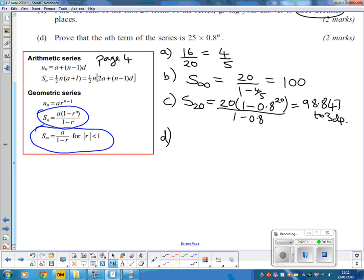Again, there's a formula in the formula book, now we're using the one we haven't used yet. That says U_N equals A, A was 20, times the common ratio to the power of N minus 1. You'll notice that this isn't quite how they've written it. They've written it as 25 times 0.8 to the power of N. So the minus 1 is missing.